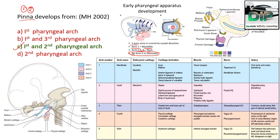Let's go to the theory. Talking about early pharyngeal apparatus development, there are five arcs that arise in cranio-caudal direction. Arc 1 gives rise to the mandible, but arcs 2 to 4 and 6 give rise to the neck. There is no arc 5 in mammals. This picture shows the earlier development in the embryo.